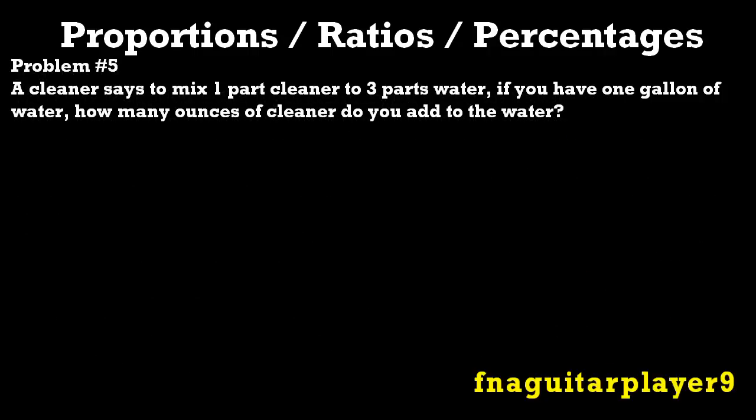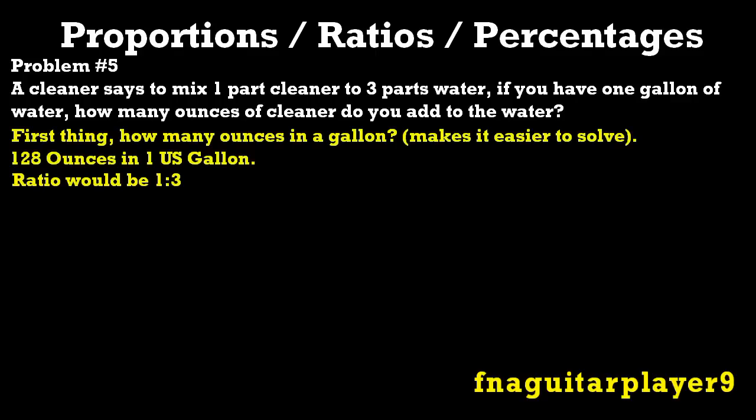Now this fifth problem is another more practical application of it. This is dealing with an actual proportion. A good example of this would be like an engine degreaser or a household cleaning product. It says a cleaner says to mix 1 part cleaner to 3 parts water. If you have one gallon of water, how many ounces of cleaner do you add to the water? The first thing to make it easier to solve is to know how many ounces is in a gallon. This is the U.S. so it's 128 ounces in one U.S. gallon. And your ratio in this formula would be 1 to 3.